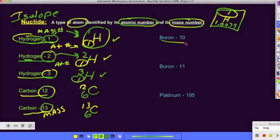Boron-10, symbol for boron is a capital B. 10 is the mass number, and if you look on the periodic table, you'll find the atomic number for boron is 5. Boron-11, capital B for boron. Mass number 11, atomic number 5.